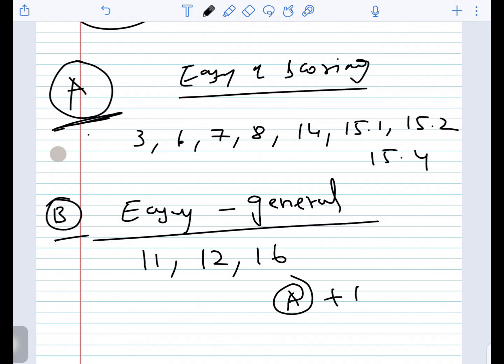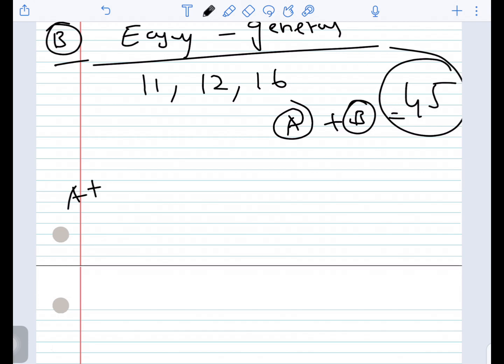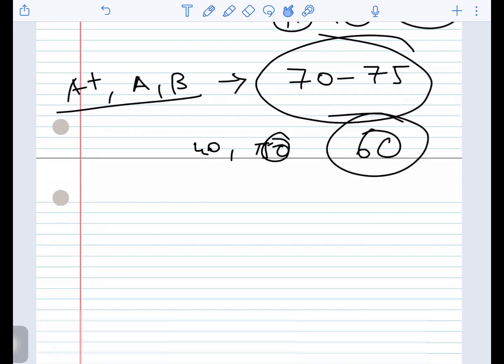A+ category and B category together give you 45 marks. If you prepare these three categories—A+, A, and B—you can score 70 to 75 marks, which means direct exemption. If you prepare well and score 70 to 75 marks, you can easily get above 50 marks.